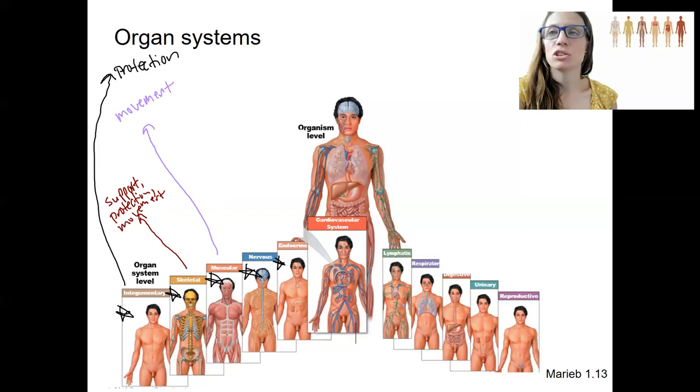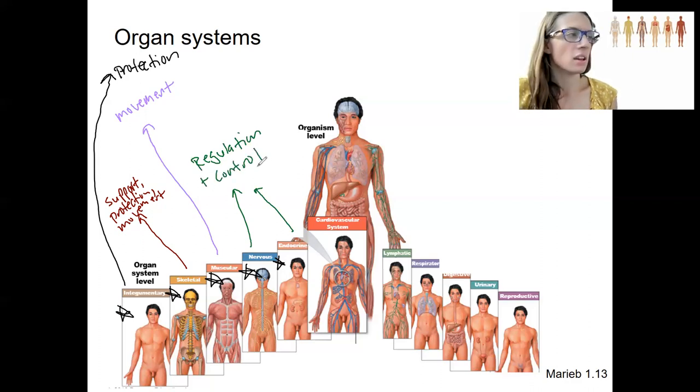Nervous system and endocrine have similar functions in that they both are regulation and control, directing body systems. Nervous system is going to be a little quicker. Endocrine takes a little longer to do that. And we'll talk more about each of those.